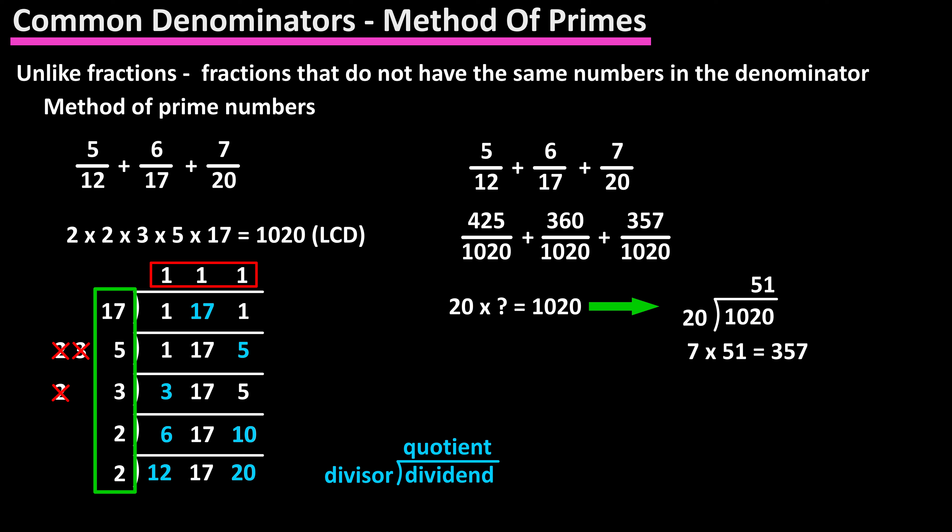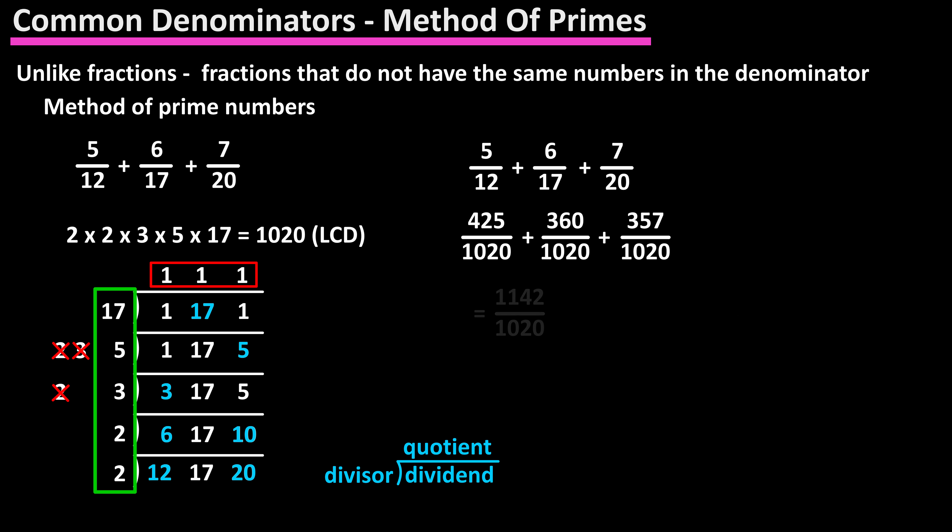Now we can add the fractions together, and our answer is 1,142 over 1,020. And if you want, you can convert this to a mixed number and reduce the fraction, which is 1 and 61 over 510.